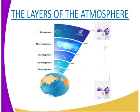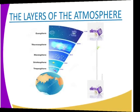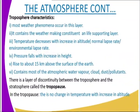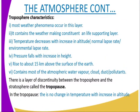We have a diagram that you can see. We have the troposphere, the stratosphere, the mesosphere, and the thermosphere before we come to the exosphere. But the main ones we look at are the four layers. Let us look at their characteristics, starting with the troposphere.